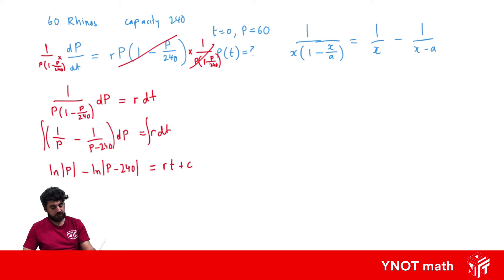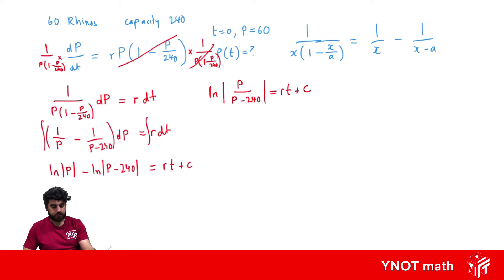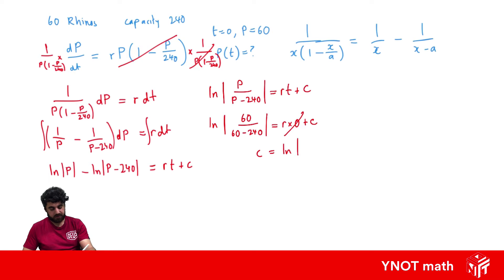We can tidy this up because we have the subtraction of logs, which is the log of a quotient. So we have ln of the absolute value of p over p minus 240 equals rt plus a constant. Using the initial condition that when t equals 0, p equals 60, we substitute in: ln of 60 over 60 minus 240 equals r times 0 plus c. That's all just 0, so c equals ln of the absolute value of 60 over minus 180, which is just 1/3.